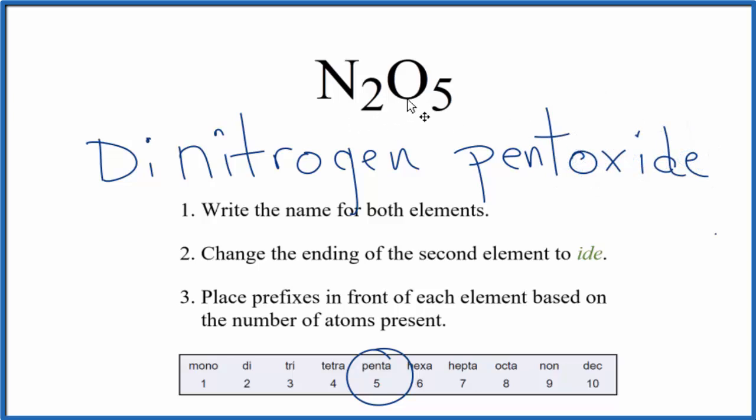And the name for N2O5 is dinitrogen pentoxide.